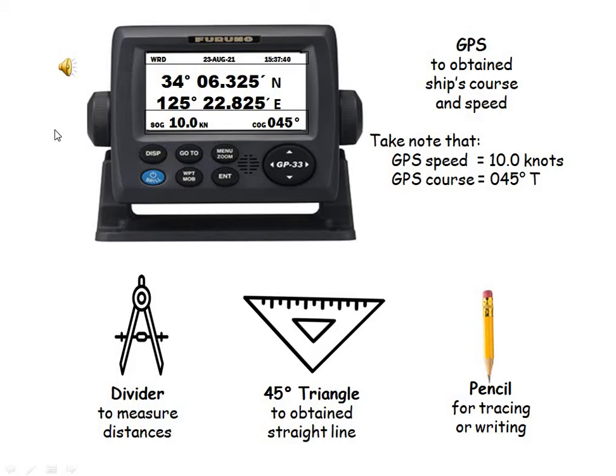To answer this exercise, GPS ship's course and speed is provided. GPS speed equals 10.0 knots, GPS course equals 045 degrees true. The student must have a divider to measure distances, a couple of 45-degree triangles to obtain a straight line, and a pencil for tracing or writing.